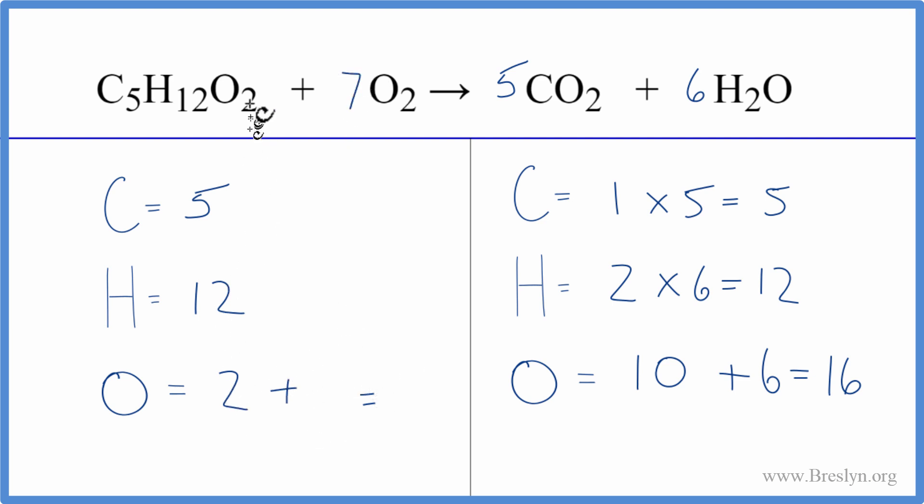So we have our two plus two times seven is fourteen, and that equals sixteen. So now the oxygens are balanced, everything else is balanced, and we're done.